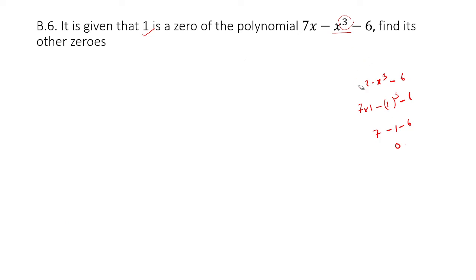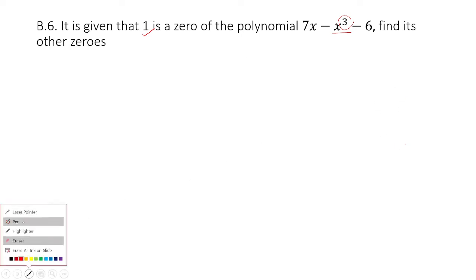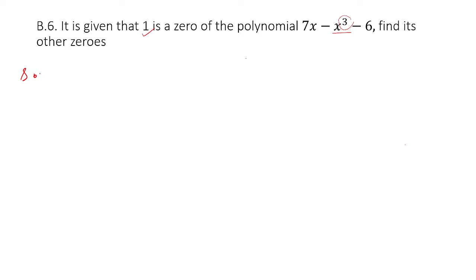We have to find the two other values. How do we know? Because the degree given here — the highest power is 3 — there will be 3 zeros and they have given us 1. So, they have given us the first zero, which is x equal to 1.